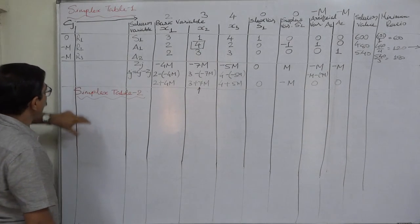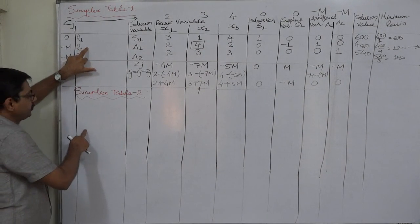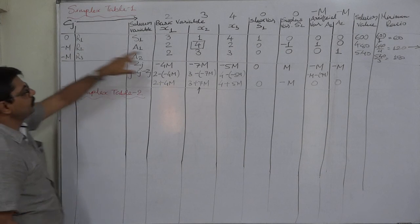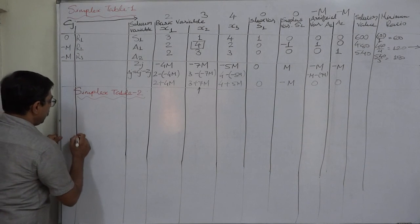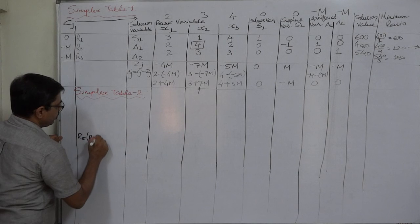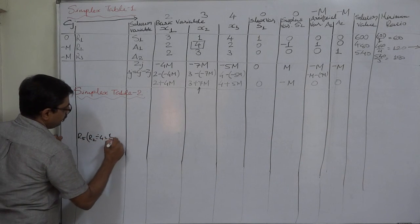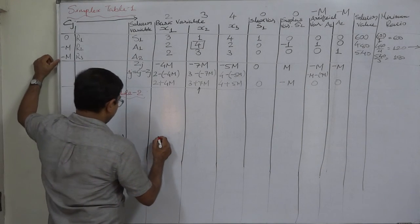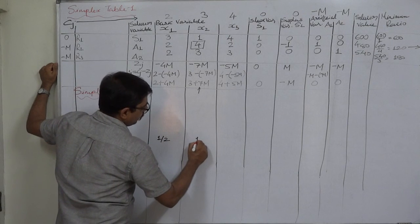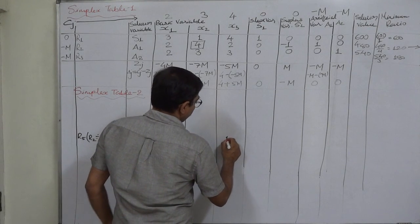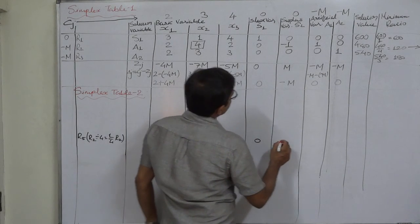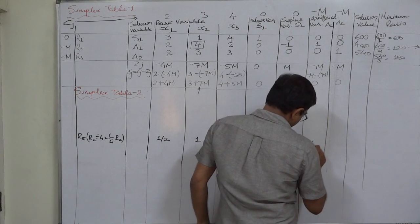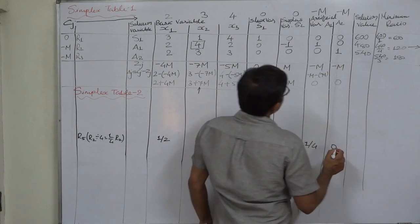First we have to prepare the row in the new table in the place of r2. That will be r5, which is r2 divided by the key element 4. So r5 = r2/4. 2 divided by 4 is 1/2. 4 divided by 4 is 1. 0 divided by anything is 0. Minus 1 divided by 4 is minus 1/4. 1 divided by 4 is 1/4. 0 divided by anything is 0.